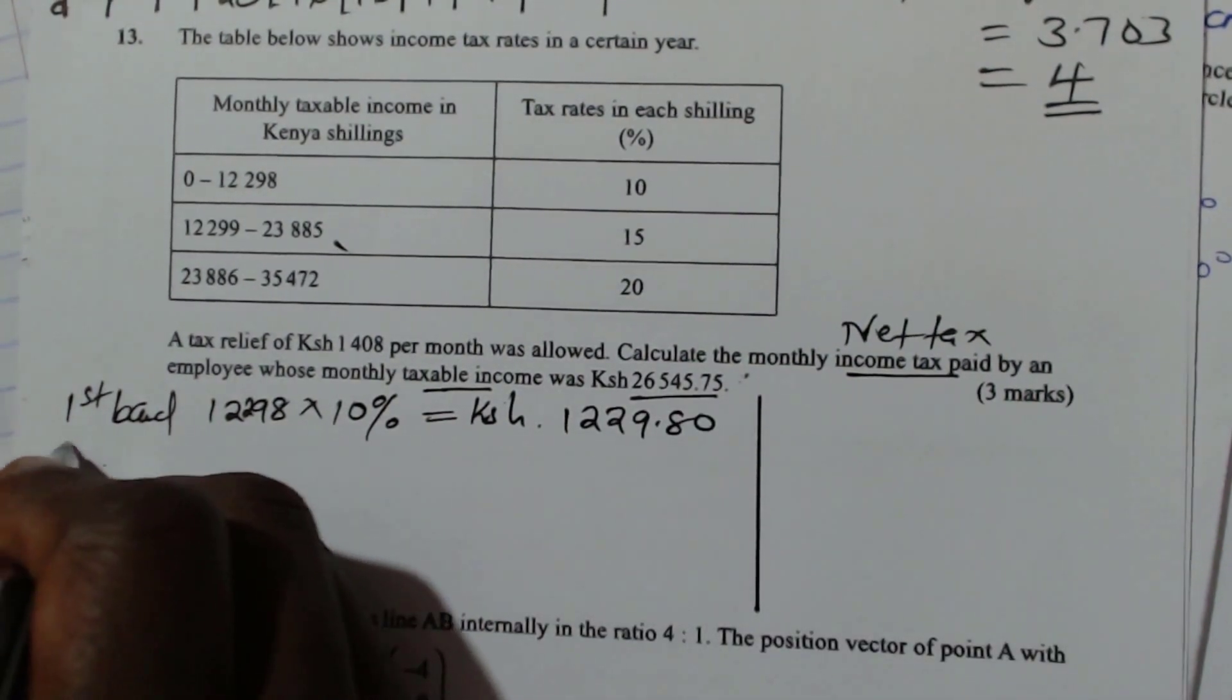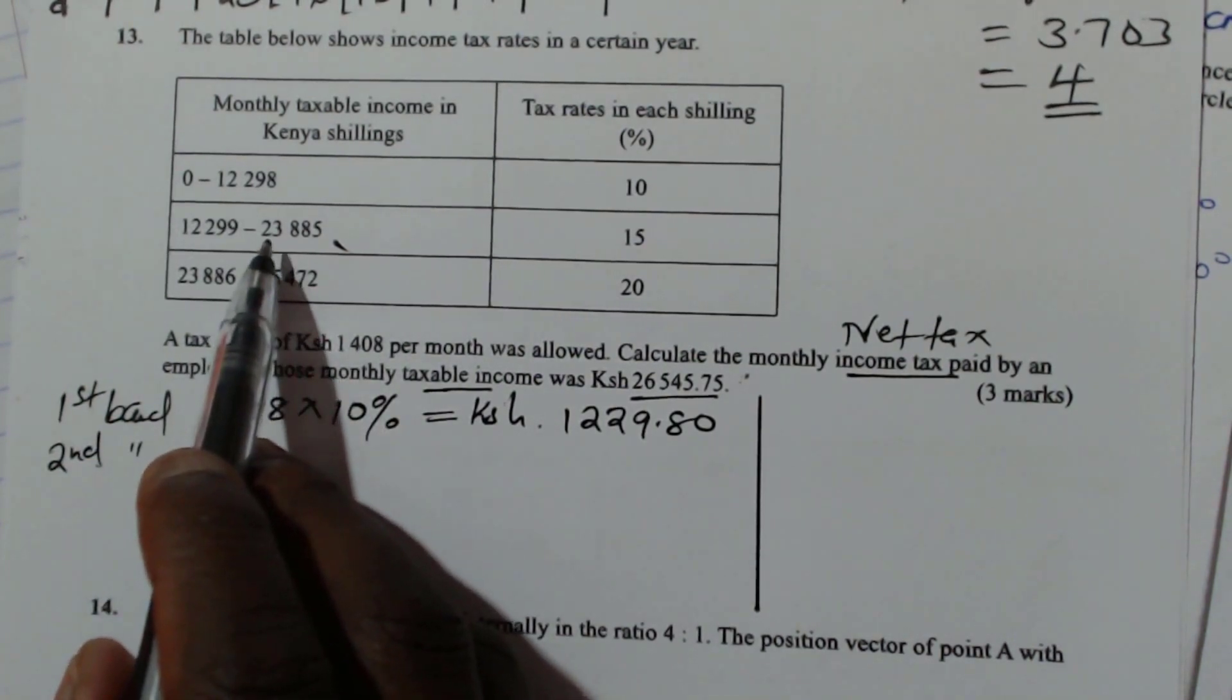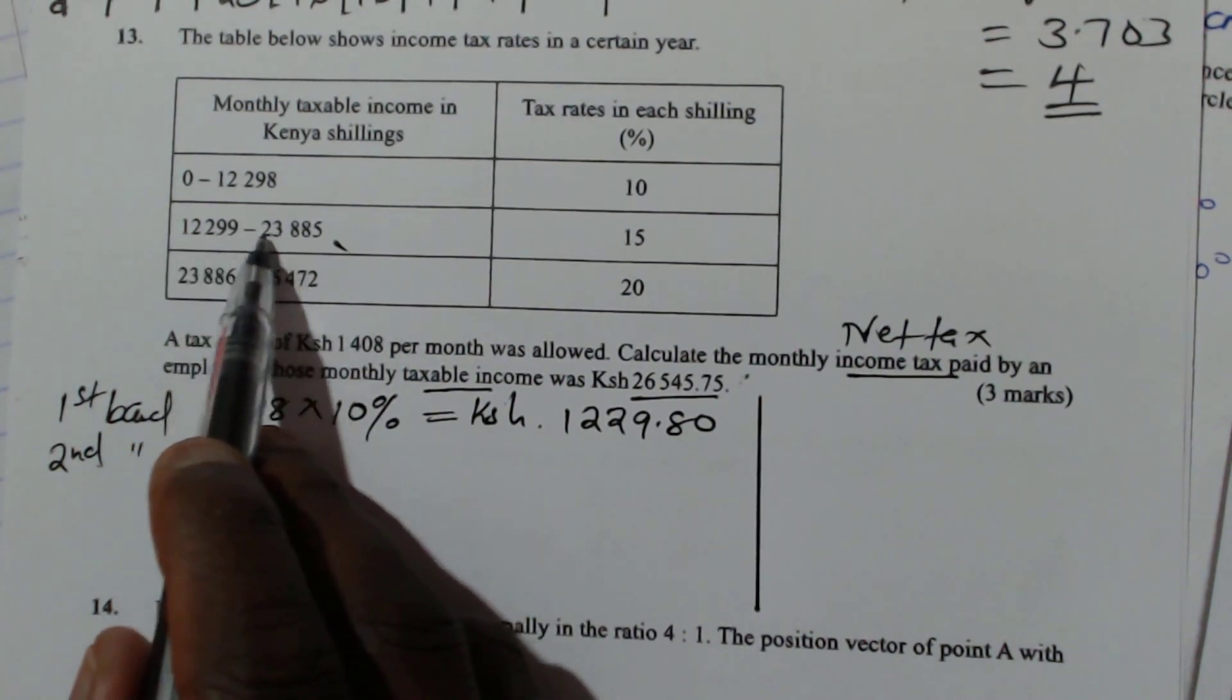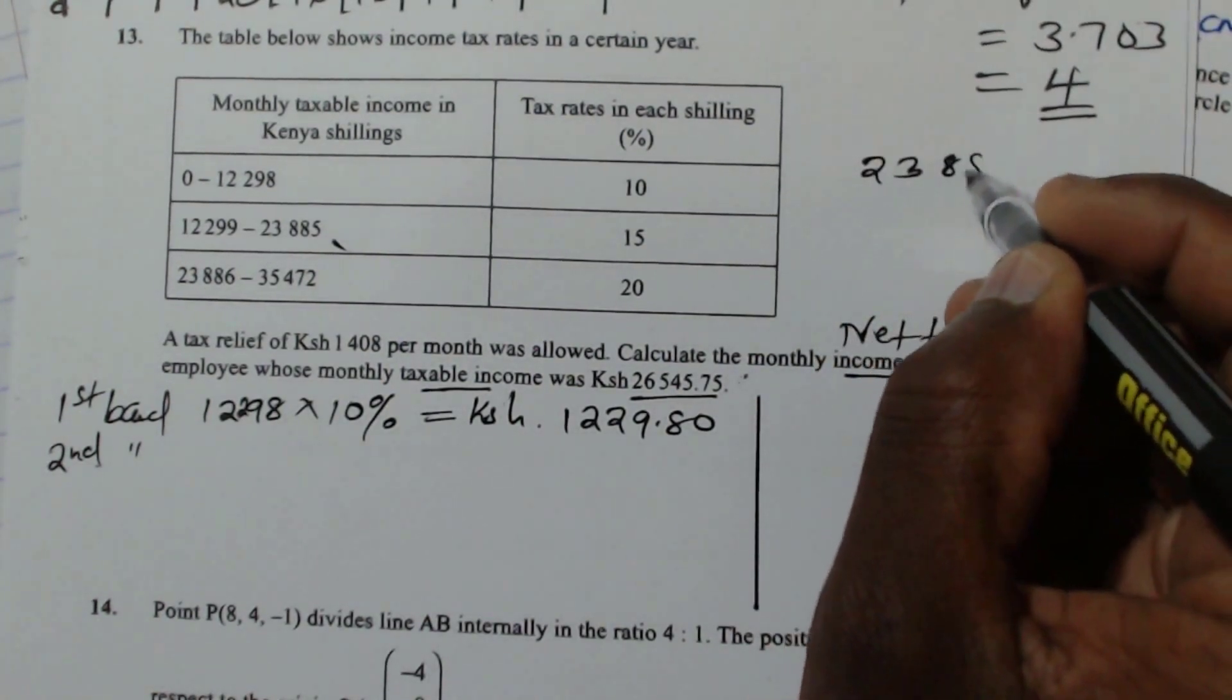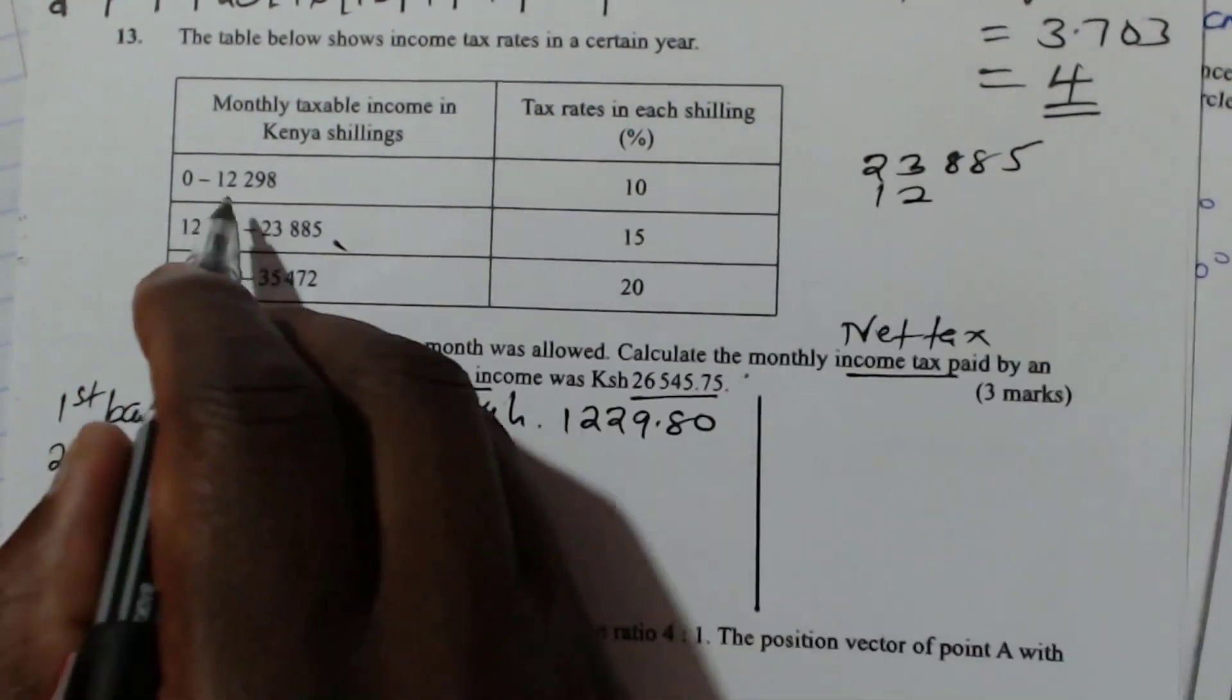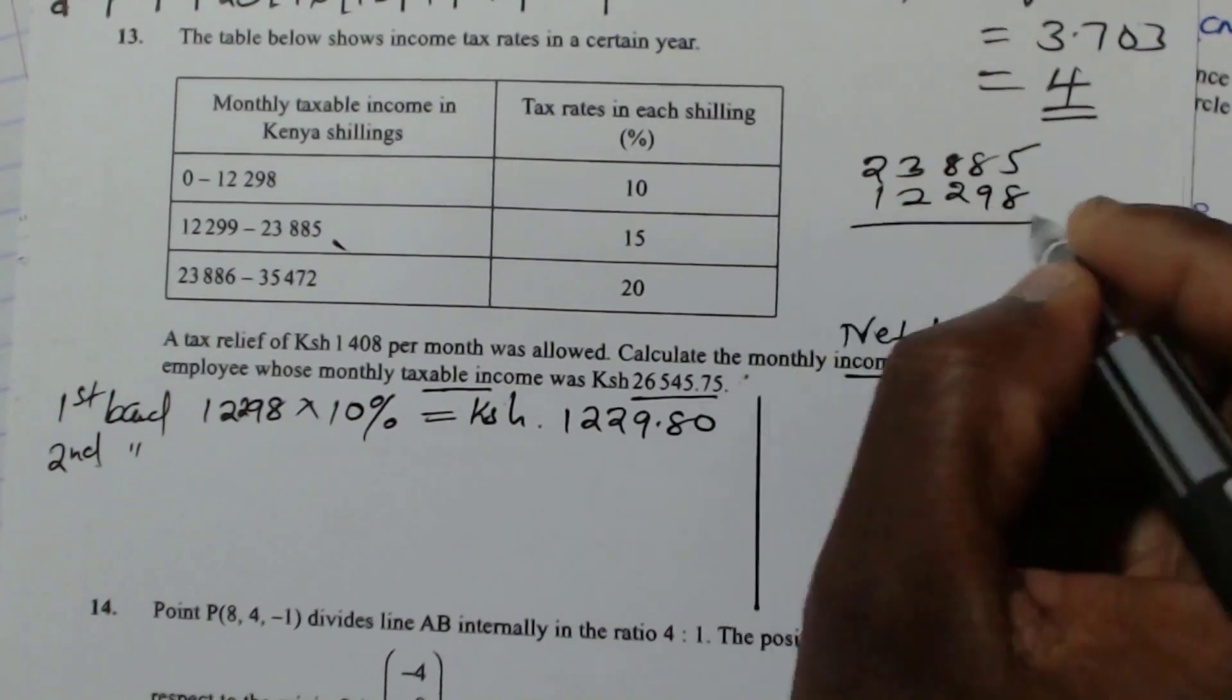The second band, now to get the second band, you have to get the difference. This is how you get the difference. This is the taxable income here. So this is how we do it. 23,885, subtract 12,298.